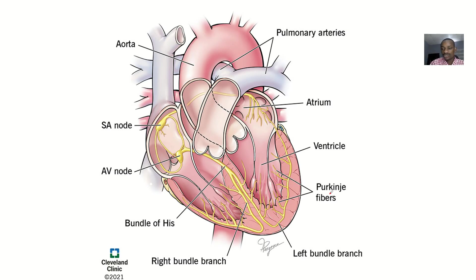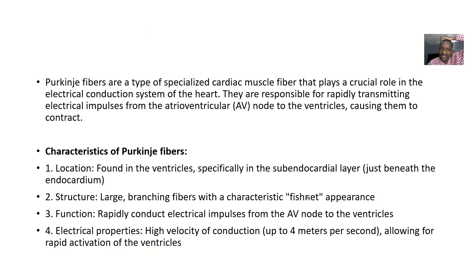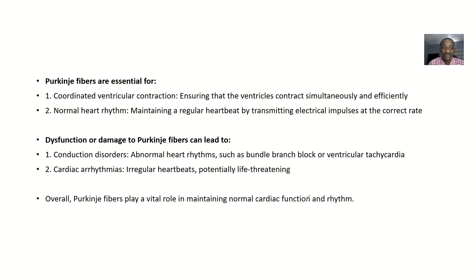We're talking about the Purkinje fibers, which are a major component of the conduction system of the heart. You can see that the Purkinje fibers are the last part of the conduction system — there are no other fibers after them. They are the most numerous in number. We'll look at the definition, the characteristics, and why they are essential.